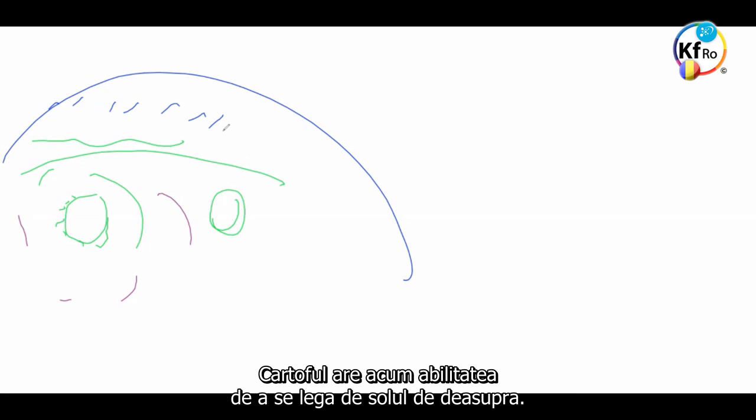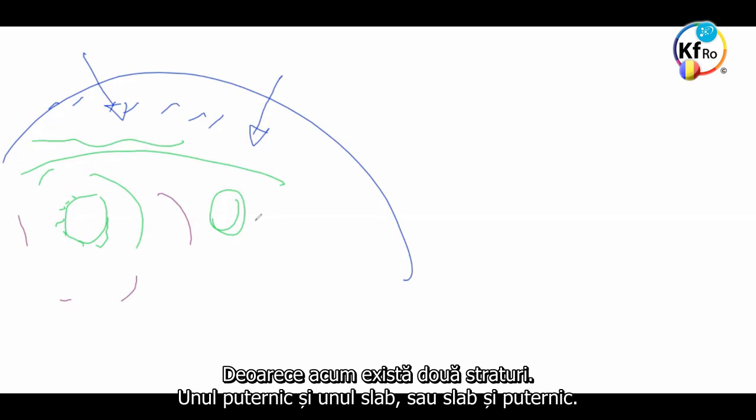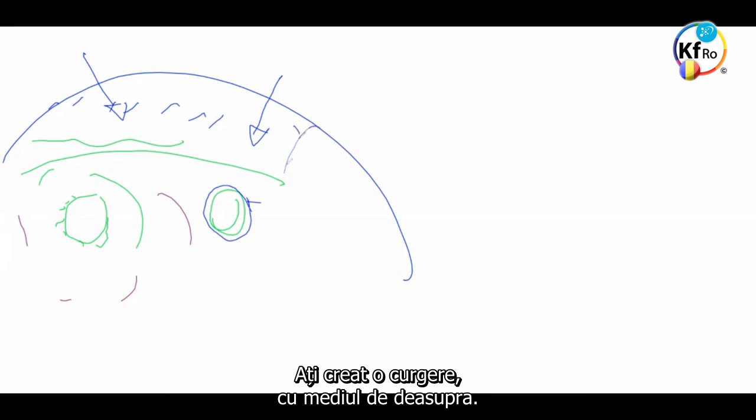The potato has the ability now to link to above soil because now there is two layers of it. The stronger, weaker, or weaker, or stronger, you create a flow with upper environment.